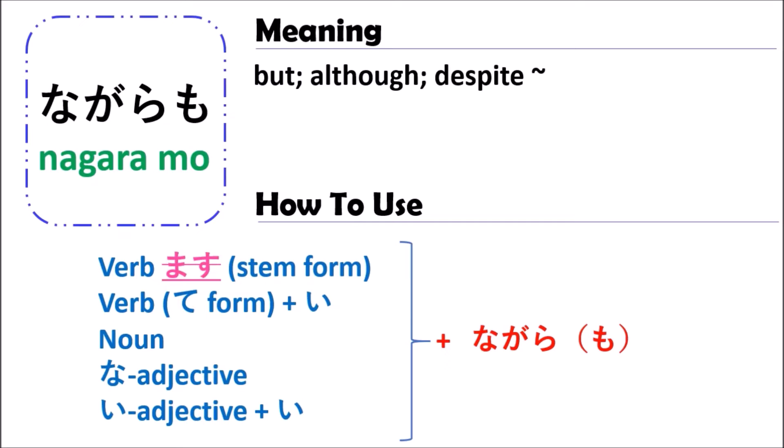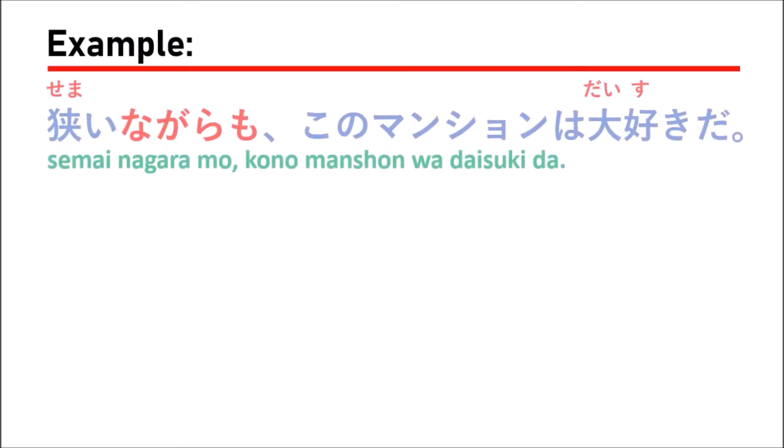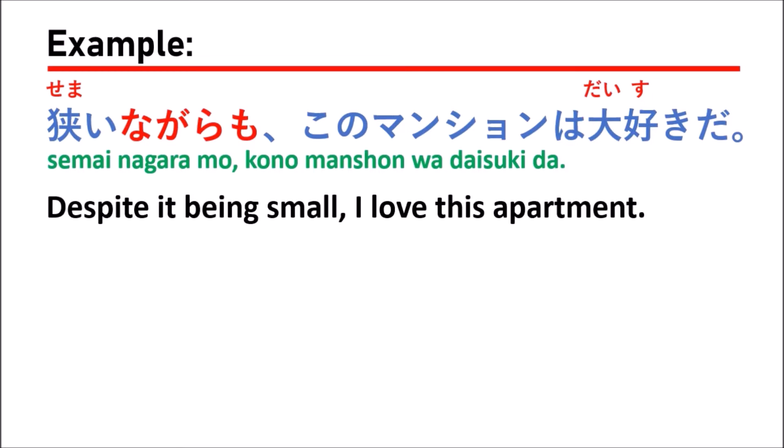To better understand how to use the grammar of nagaramo, let's look at some examples. For example: semai nagaramo, kono manshon wa daisuki da. This means 'despite it being small, I love this apartment.'